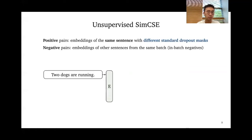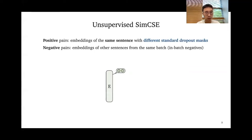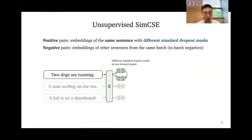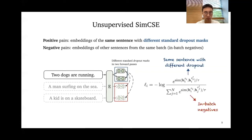Let me give you a concrete example. For the positive pairs, we take one sentence and encode it, then encode the very same sentence again. Because of standard dropout, we get two different embeddings. For the negative pairs, we simply take all the other sentences in the mini-batch — these are in-batch negatives. Looking at the info-NCE loss objective, we have the similarity between two encodings of the same sentence with different dropout masks as the numerator, and in-batch negatives in the denominator. We'll show later that this simple heuristic for positive pairs can even beat previous supervised SOTA.